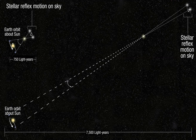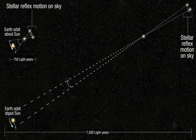The first successful measurements of stellar parallax were made by Friedrich Bessel in 1838 for the star 61 Cygni using a heliometer. Stellar parallax remains the standard for calibrating other measurement methods. Accurate calculations of distance based on stellar parallax require a measurement of the distance from the Earth to the Sun, now based on radar reflection off the surfaces of planets. The angles involved in these calculations are very small and thus difficult to measure. The nearest star to the Sun, and thus the star with the largest parallax, Proxima Centauri, has a parallax of 0.7687 ±0.0003 arcsec. This angle is approximately that subtended by an object 2 cm in diameter located 5.3 km away.